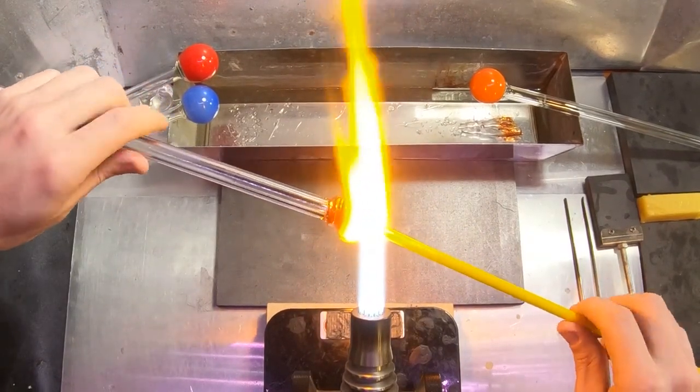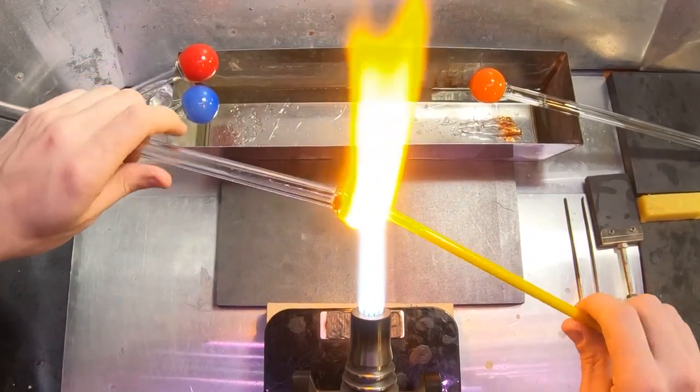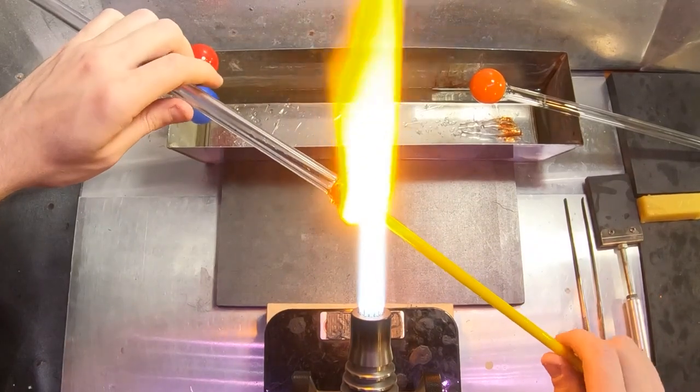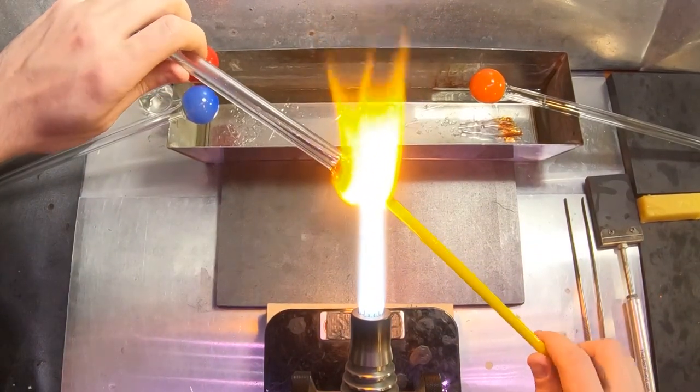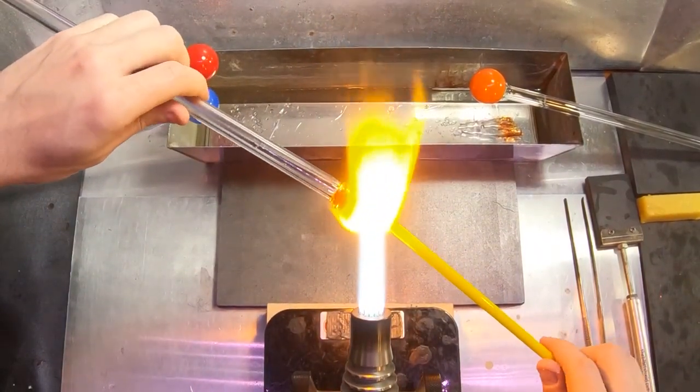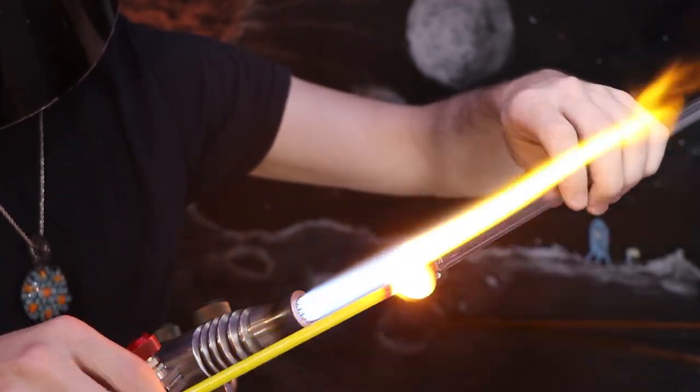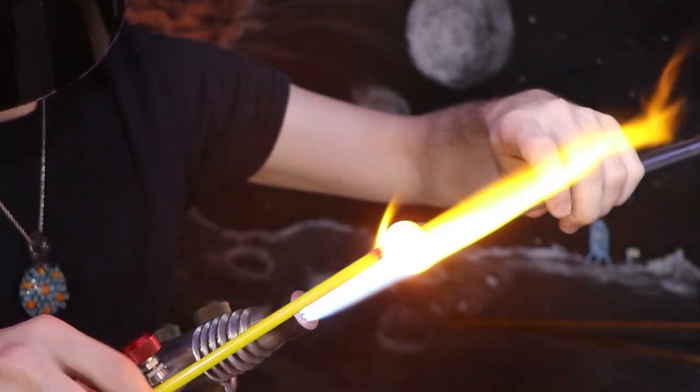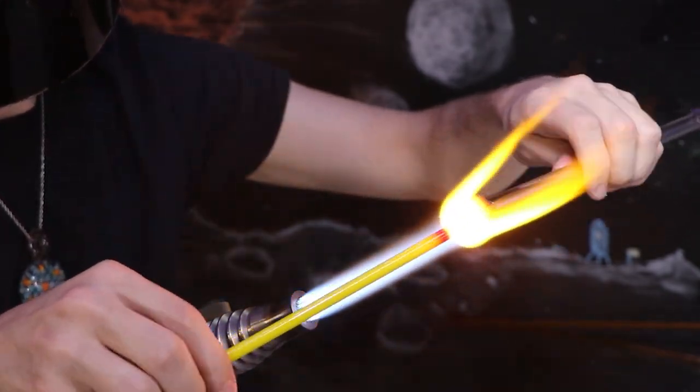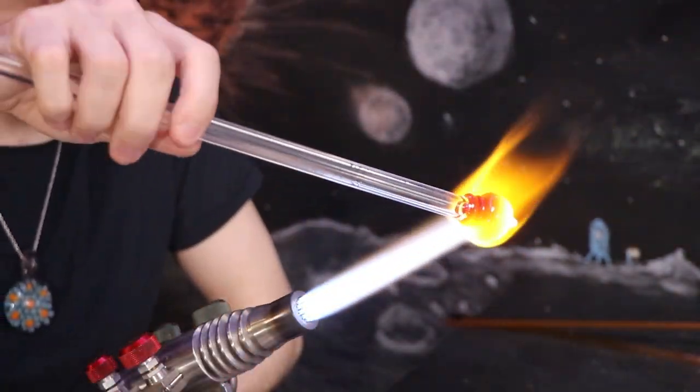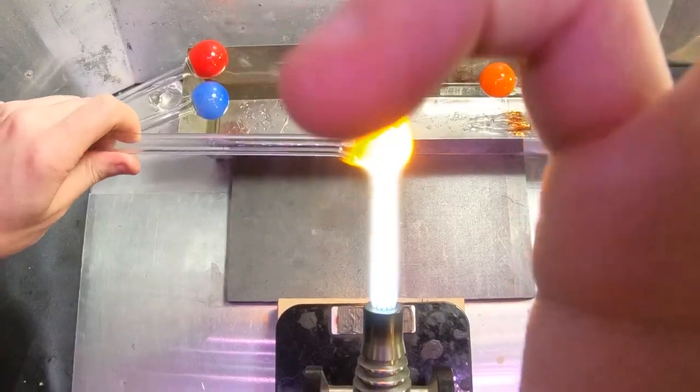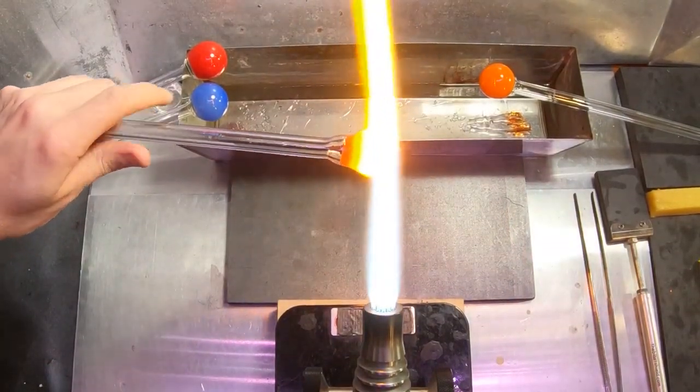It's good to do research on your colors before you use them to see if they're heat sensitive, like these cadmiums, or flame sensitive, like these silver strikers. A neutral flame is usually the best default, but you can check my flame adjustment video to find out how to adjust for what you need.